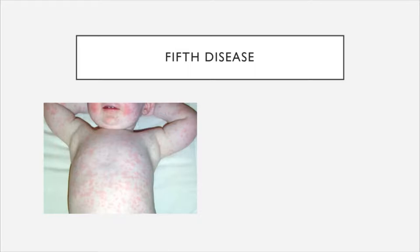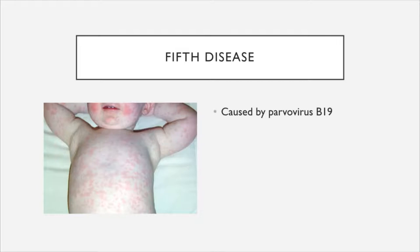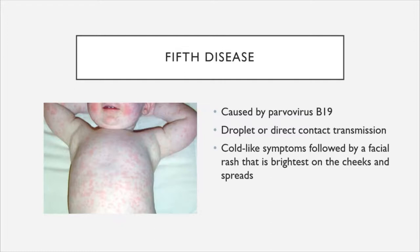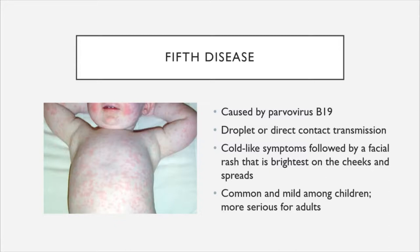Fifth disease shares features with roseola. It is named for being the fifth of the childhood rash-causing illnesses, including measles, rubella, roseola, scarlet fever, and fifth disease. It is caused by parvovirus B19 and transmitted through droplet or direct contact transmission. It is known for producing cold-like symptoms followed by a rash on the face that is brightest on the cheeks and can spread to other parts of the body. It is common and mild among children, but can present more serious symptoms in adults.